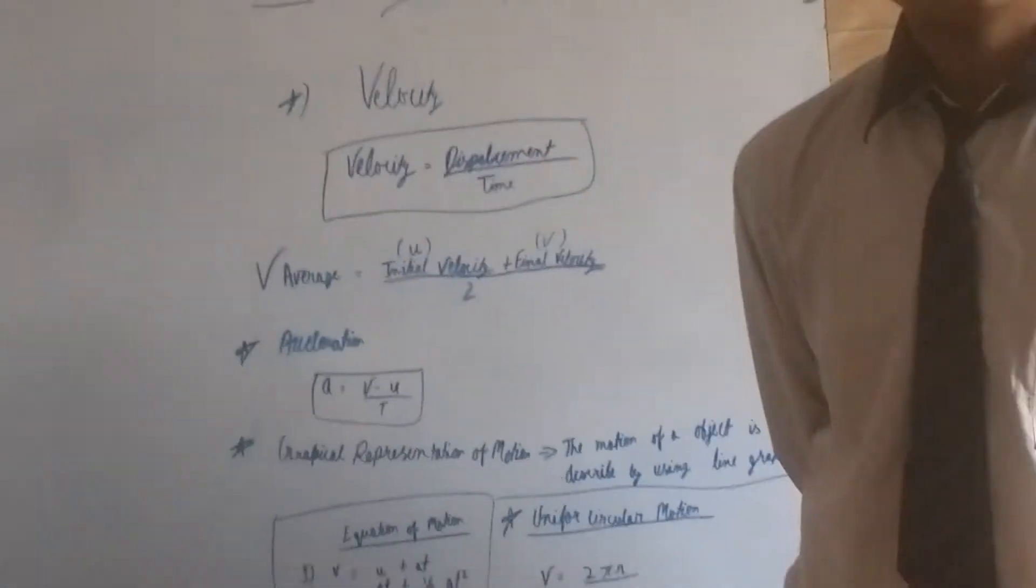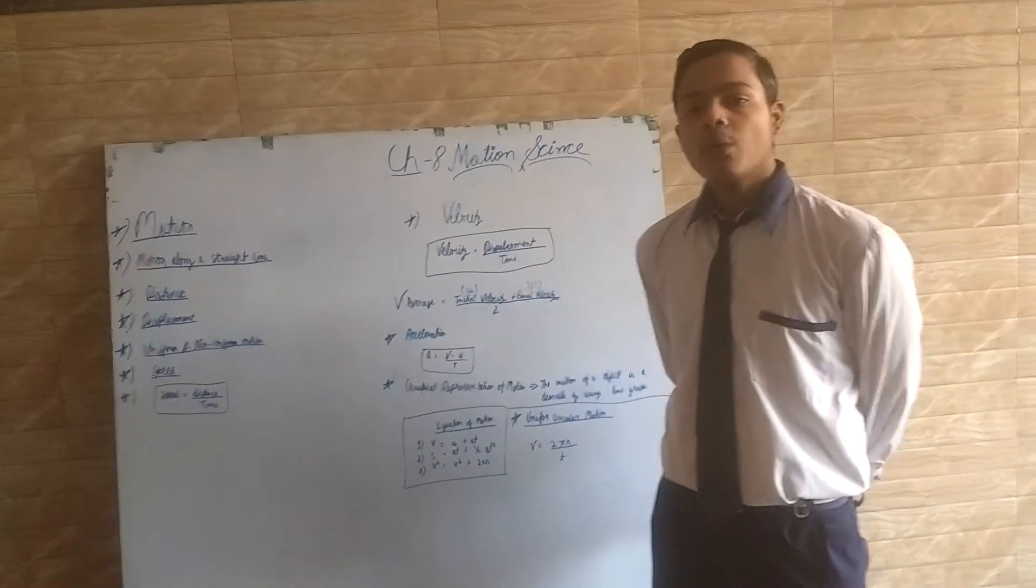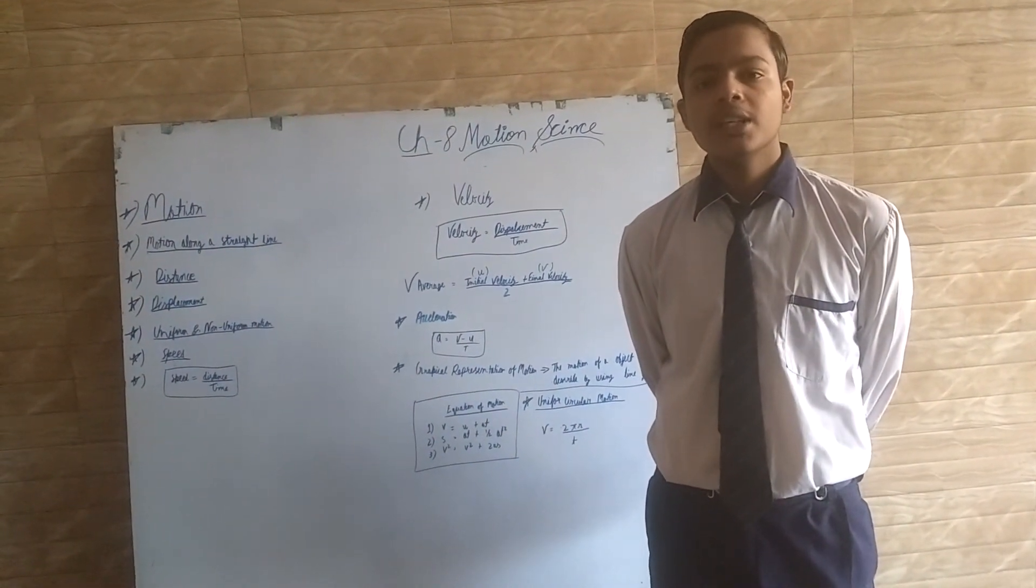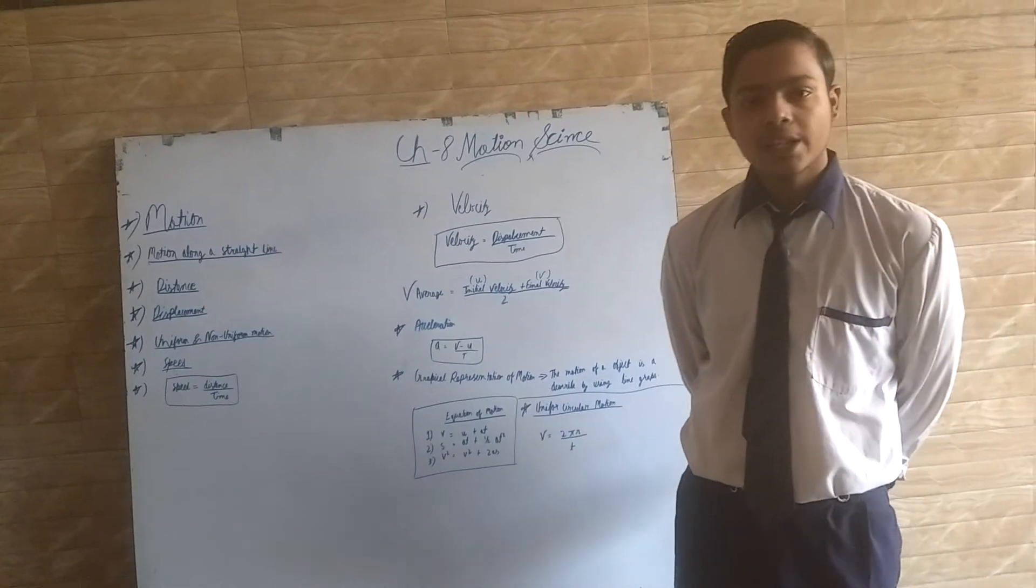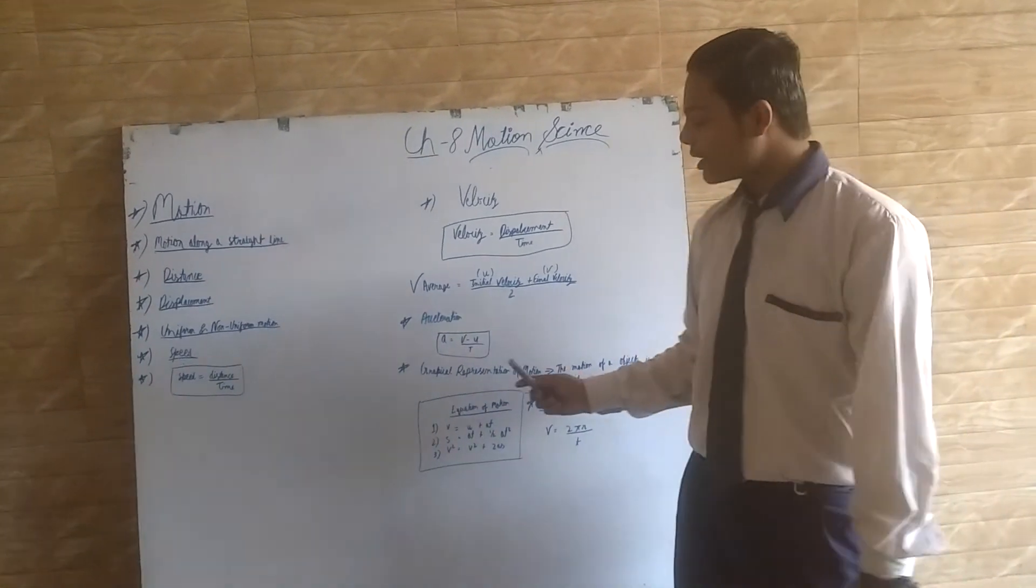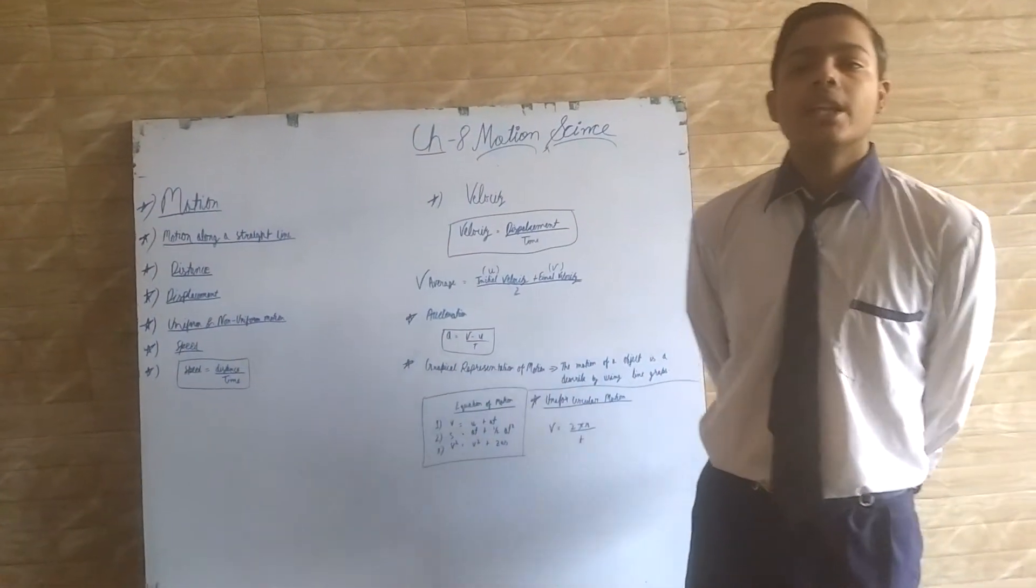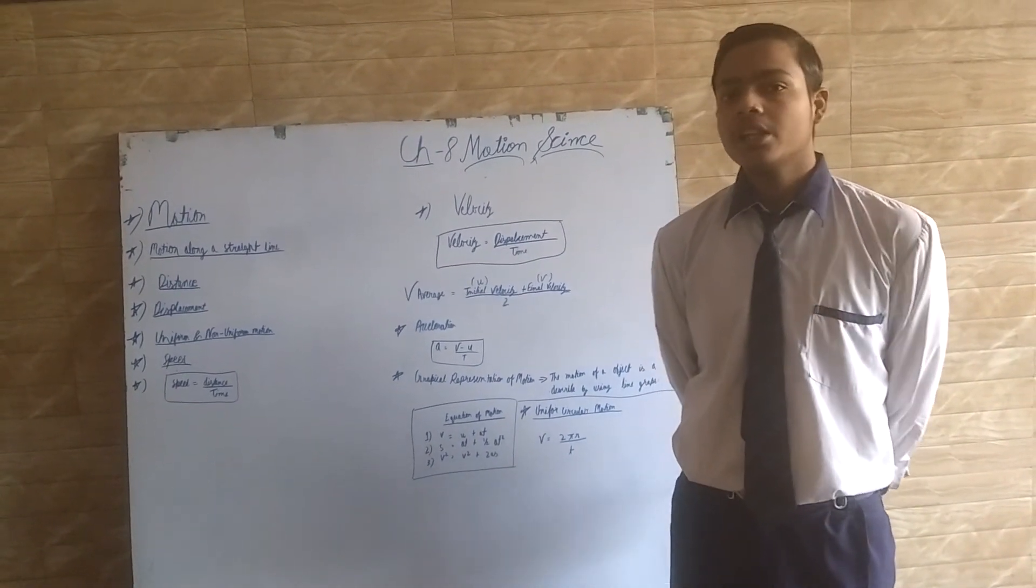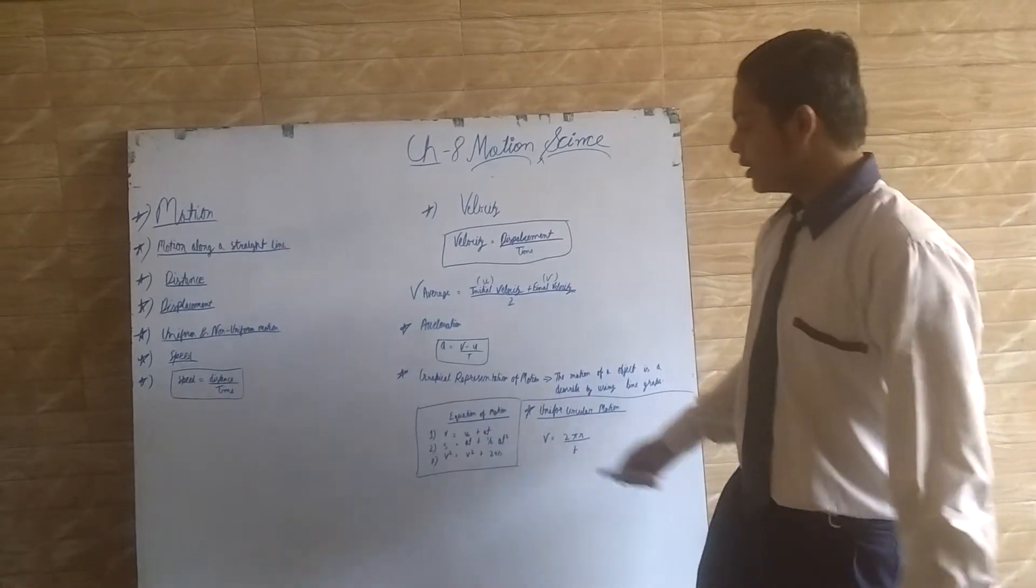Uniform acceleration means the object covers equal velocity changes in equal time intervals. Non-uniform acceleration means the object covers unequal velocity changes in equal time intervals.